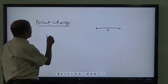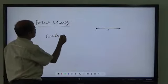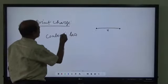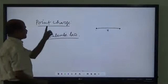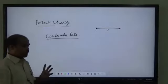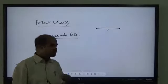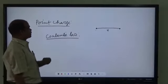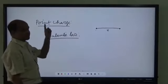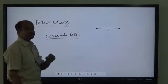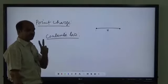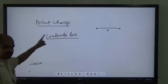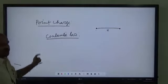To understand Coulomb's law, there are two conditions. Coulomb's law holds good only when the charges are point charges and the charges are steady (static). These are the two conditions for Coulomb's law to hold: number one, the charges are to be point charges, and number two, the charges are to be static.